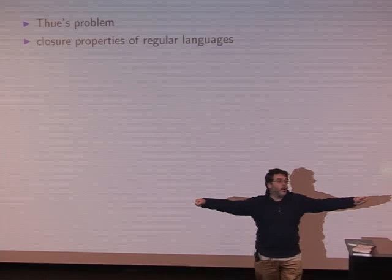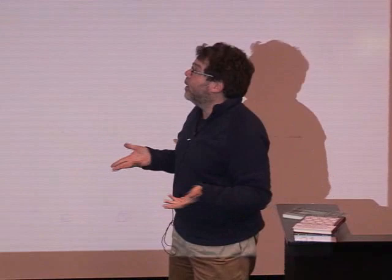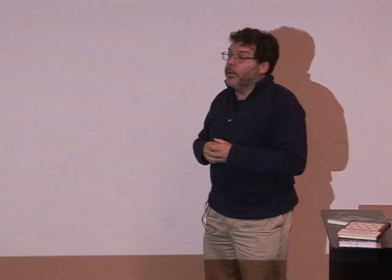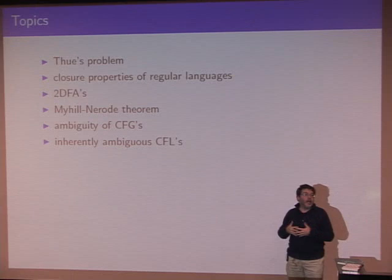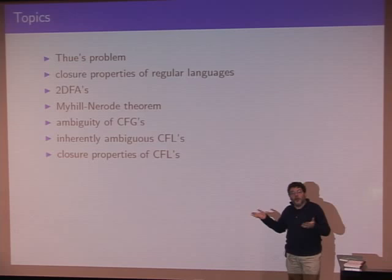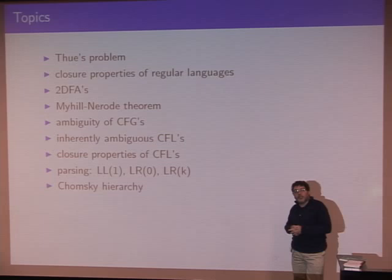Some topics covered include the Square-Free Words problem — an infinite word avoiding occurrences of two identical adjacent blocks. We look again at regular languages, closure properties at a more advanced level than in CS360 or CS365, and other equivalent models like the two-way DFA, where the head can move in either direction on the input. We look at the Myhill-Nerode theorem, one of the most basic results about regular languages, and ambiguity of CFGs — including proofs that inherently ambiguous context-free languages exist, which CS462 covers but CS360 and CS365 typically don't.